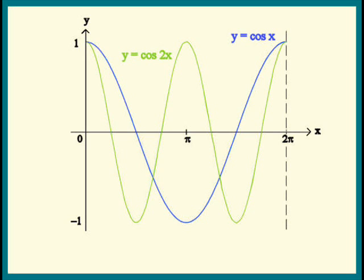Notice how the graph of cosine x got pushed towards the y-axis. We could say that it was compressed. Also from the picture, we see that the period of cosine 2x is pi.